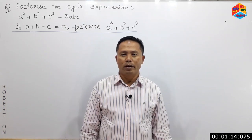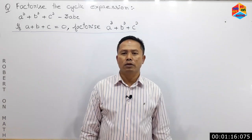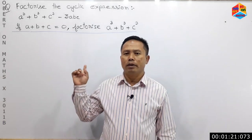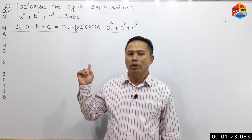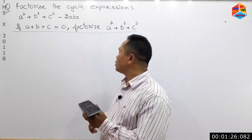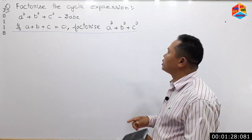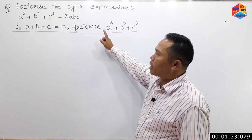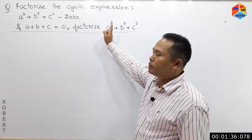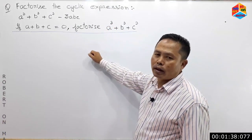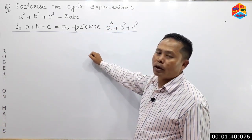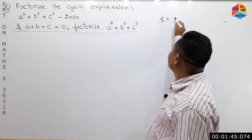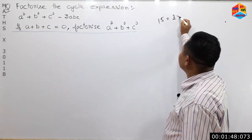This is the subject of factorization. The expression is a cube plus b cube plus c cube minus 3abc, a cyclic expression to be factorized. 5 is equal to 15, which is equal to 3 into 5.